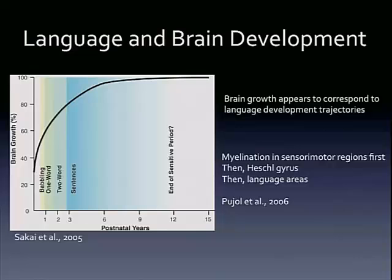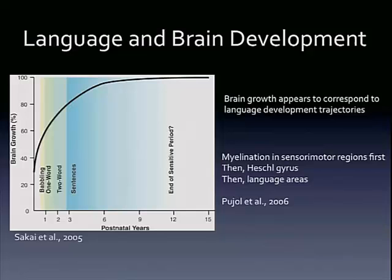What we know about language is that language acquisition actually occurs in a similar trajectory to brain development. We're seeing rapid increases in language acquisition in the first few years of life — a very steep slope, just like we saw with cortical growth. And then it levels off, with slower rates of language acquisition, and again at the same time, slower rates of brain development. Myelination occurs in sensory motor regions first, and then Heschl's gyrus develops, with language areas developing later.